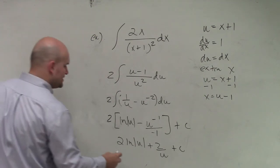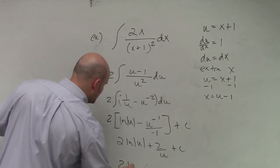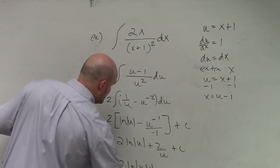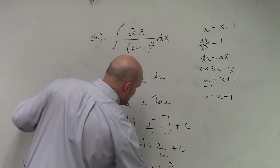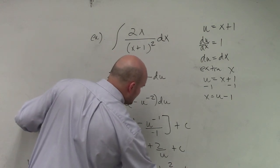And then I can plug in what u is again, which is x plus 1. 2 equals ln of x plus 1 plus 2 over x plus 1 plus c.